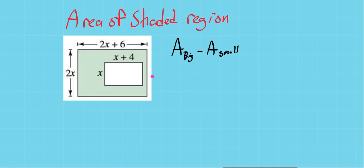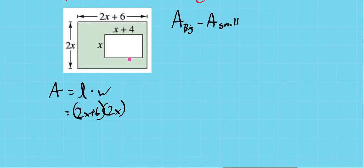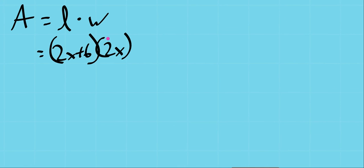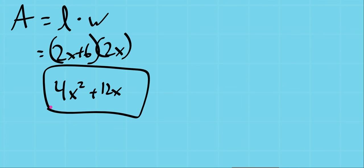So in our first one, the area of the big rectangle, we'll say is length times width. The length is 2x plus 6, which is right here. And the width right there is 2x. Now we have 2x plus 6 times 2x. This is our monomial. And this is our binomial. So 2x times 2x: 2 times 2 is 4, x times x is x squared. 2x times 6: 2 times 6 is 12, and there's the x tagging along. This is the area of our big shape.